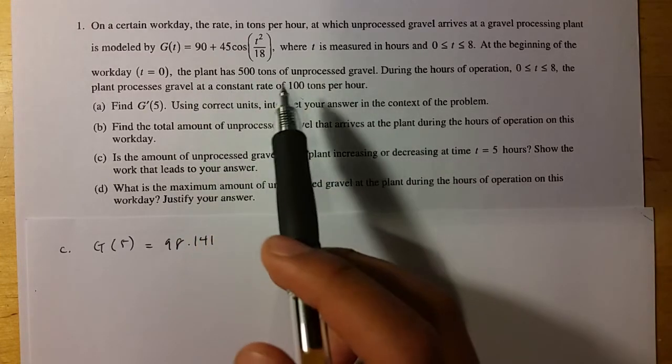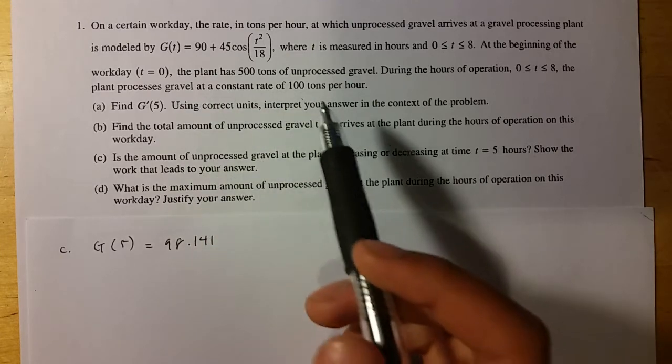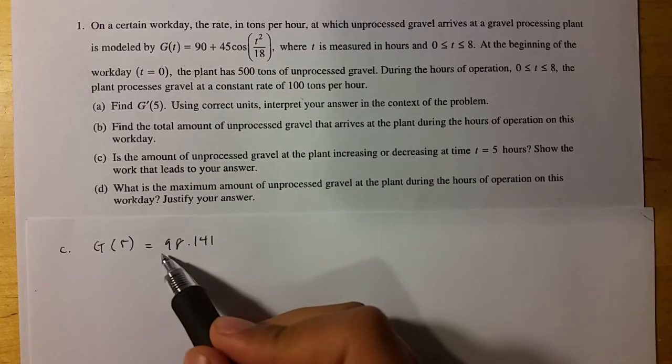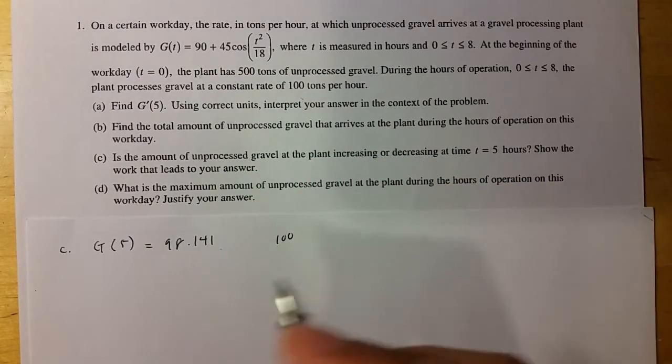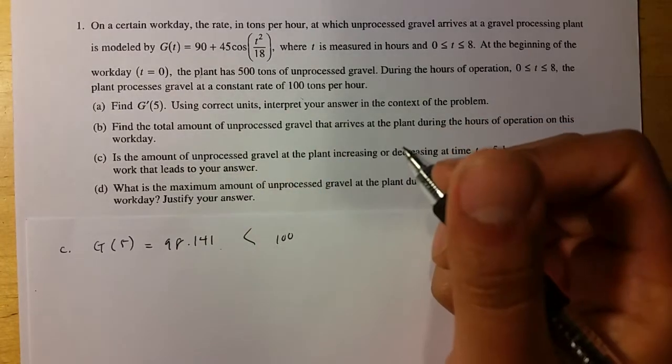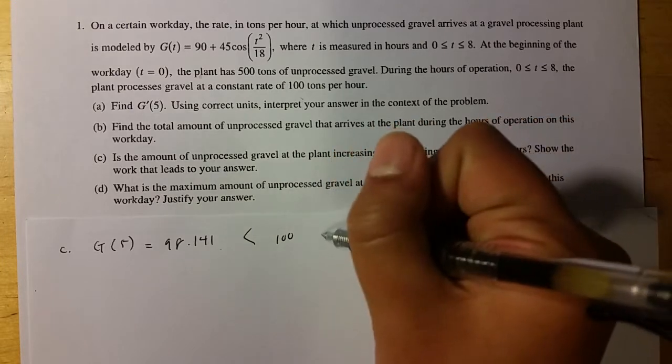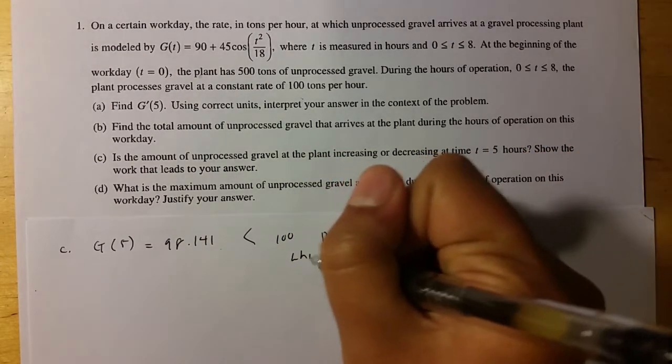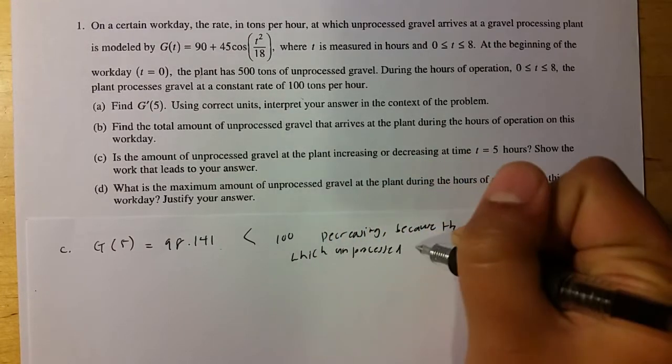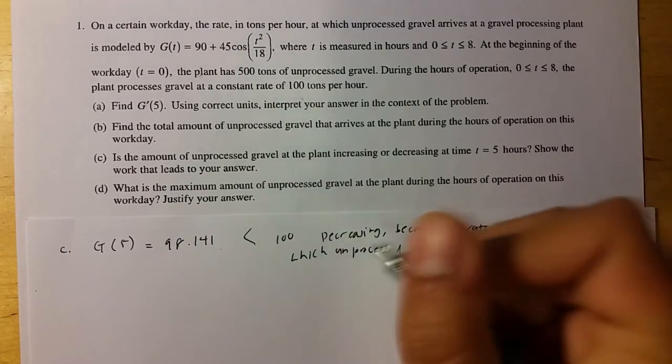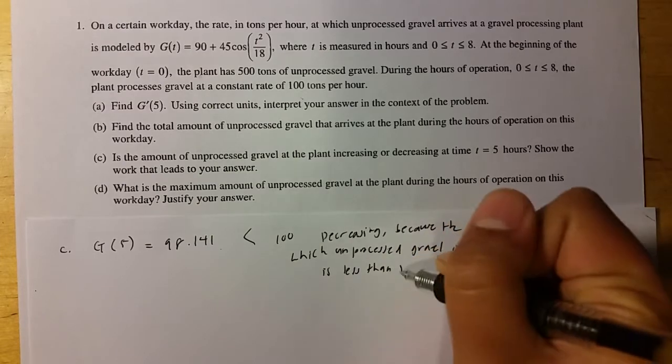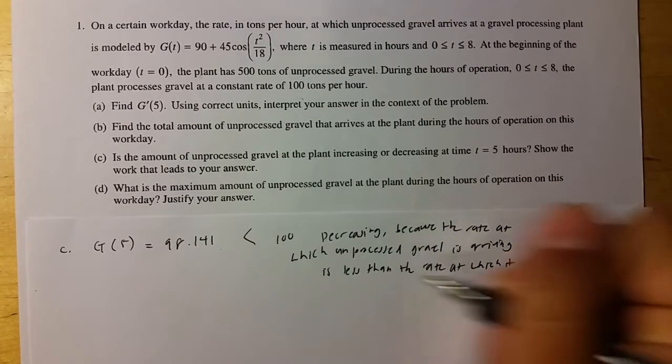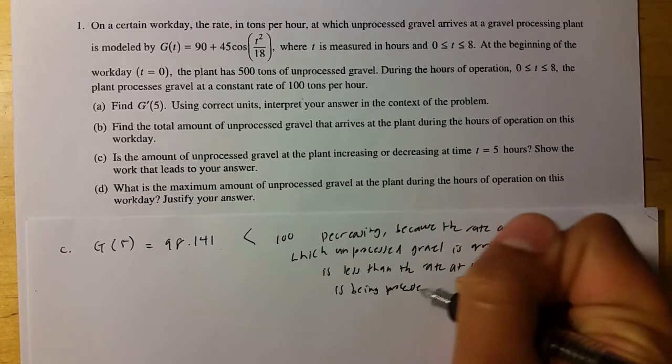But actually, the plant... I don't really like this question, because it says the plant is processing gravel at a constant rate. So actually, this means that the unprocessed gravel is actually being turned into processed gravel, which means it's being lessened. So if it's coming in at this rate, and it's going out at 100 tons per hour, well, it's coming in at a smaller rate than it's going out. So basically, it is decreasing, because the rate at which unprocessed gravel is arriving is less than the rate at which it's coming out. Processed.